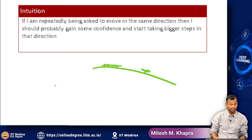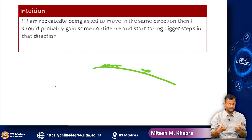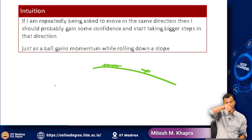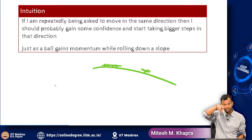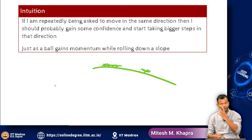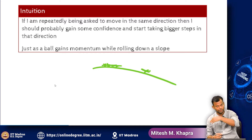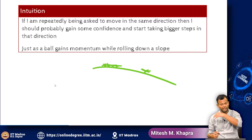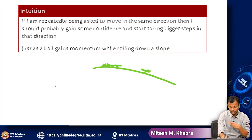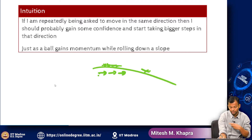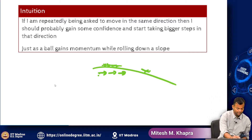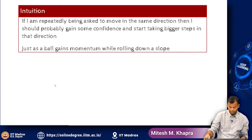That is the idea of momentum-based gradient descent, and we need to take this intuition and convert it into an equation. This is the same as a ball gaining momentum while rolling down a slope — it moves slowly on the gentle part, but as it moves it gains momentum and starts moving very fast, because it is constantly being pushed in that direction. If so many times you have been asked to go in a direction, can you go a bit faster? How do you capture this intuition into a set of equations?